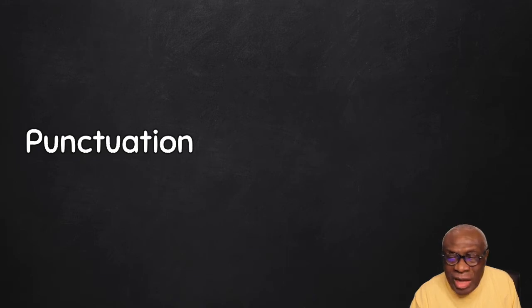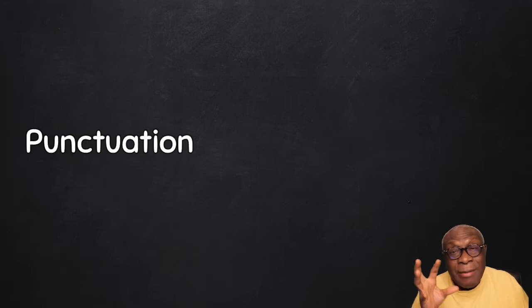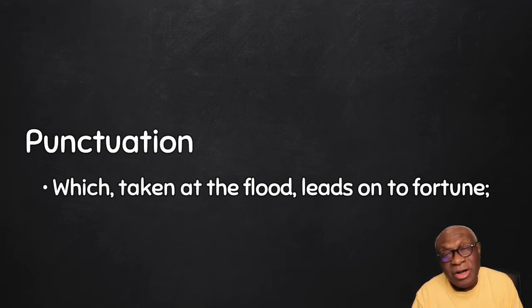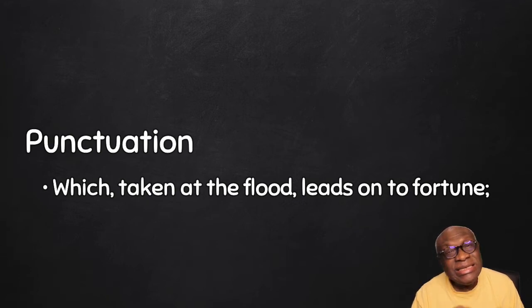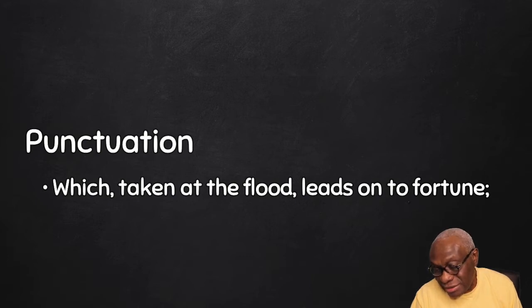The second thing I want to talk about today is punctuation. In earlier English language lessons, we looked at the double commas — two commas embedded in the middle of a sentence. We have: 'which,' comma, 'taken at the flood,' comma, 'leads on to fortune.' So 'taken at the flood' is the phrase placed between two commas. These commas indicate something is about to happen.